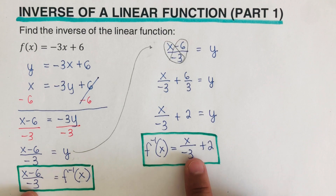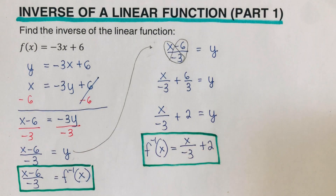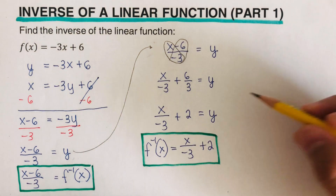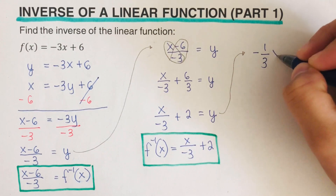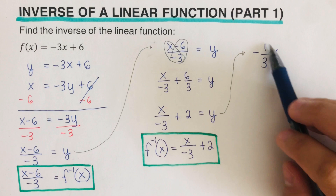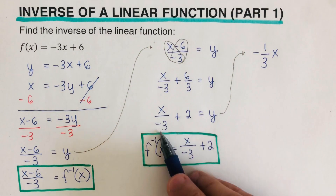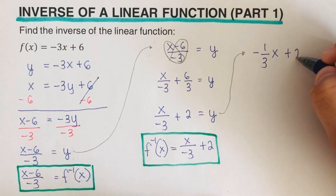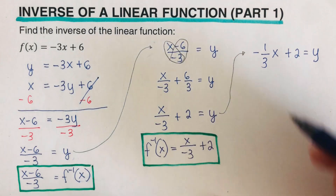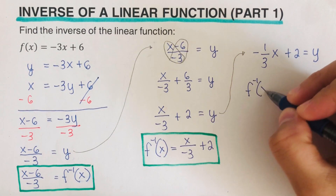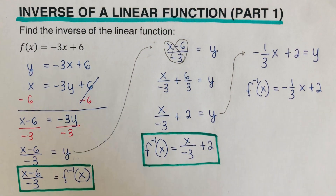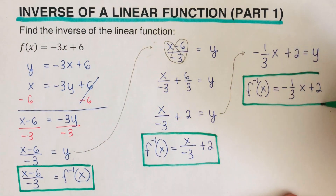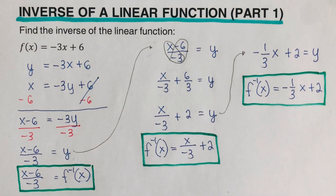These expressions are not different — they are equivalent expressions. We can write yet another form: x / -3 is the same as (-1/3)x, so f⁻¹(x) = (-1/3)x + 2. These three forms are all equivalent equations — they are exactly the same inverse.